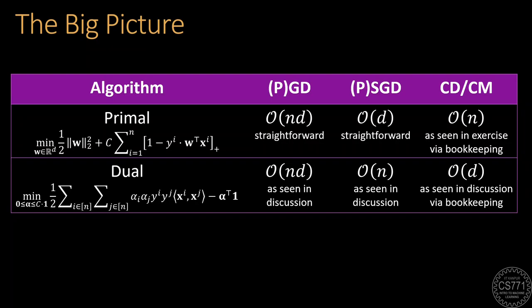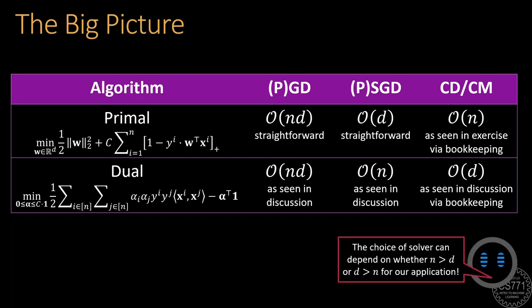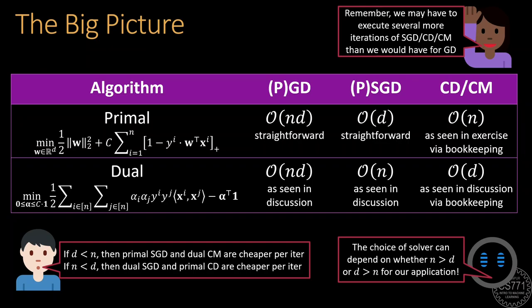Here is a table that summarizes how long each descent step takes if we are optimizing the CSVM in its primal form or in its dual form. The columns correspond to various algorithms that could have been used to solve these forms. We note that simple gradient descent or sub-gradient descent takes order nd time per step no matter whether we are solving the primal or the dual. However, interesting patterns emerge when we use stochastic gradient descent or coordinate descent or coordinate minimization. SGD takes order d time in the primal but order n time in the dual. With the coordinate techniques, the pattern is flipped. Coordinate descent takes order n time in the primal and order d time in the dual. This can influence our choice of solver. If we have more data points than dimensions, then primal SGD or dual coordinate minimization are preferable. However, if we have more dimensions than data points, then primal coordinate descent or dual SGD are preferable. Of course, remember that this is just the per step cost of various algorithms. The number of steps we need to take itself may vary across algorithms.